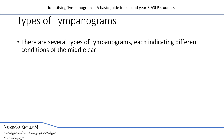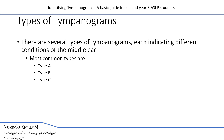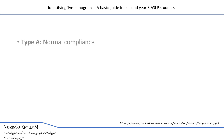The probe assembly is not discussed in this particular lecture; it will be discussed in another video lecture. With respect to types of tympanograms, there are several types, each indicating different conditions of the middle ear. The most common types are type A, type B, and type C.